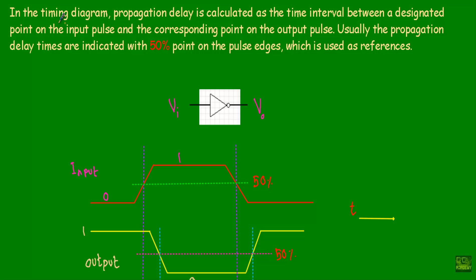Now let me show you how we calculate the propagation delay from the timing diagram. Propagation delay is calculated as the time interval between a designated point on the input pulse and the corresponding point on the output pulse. Usually, the propagation delay times are indicated with the 50% point on the pulse edges, which is used as a reference.